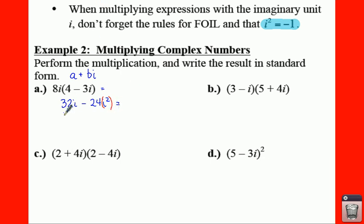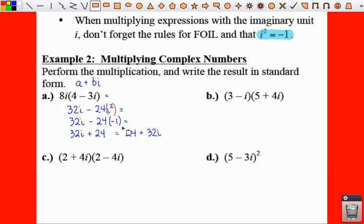So what we need to do is write this as 32i minus 24, and for i squared you can plug in negative one. So you get 32i minus 24 times negative one, which gives you plus 24. So in standard form you write the 24 first and then plus 32i. So there would be your answer for example a.